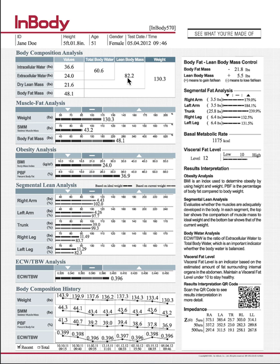Your lean body mass is basically your weight minus body fat. That includes intracellular and extracellular water and dry lean mass. Intracellular water is what is inside your muscle cells — this number will increase or decrease if you build or lose muscle mass or you're really dehydrated, but you don't see a huge change in this number on a day-to-day basis.